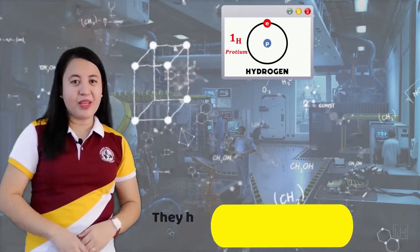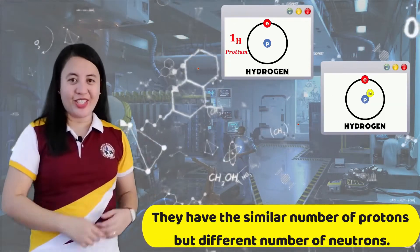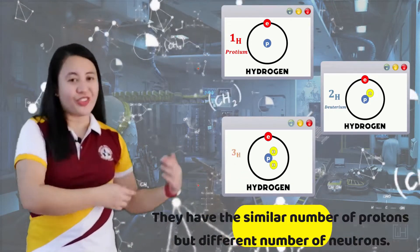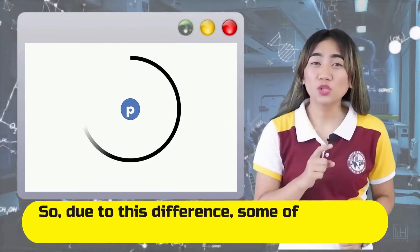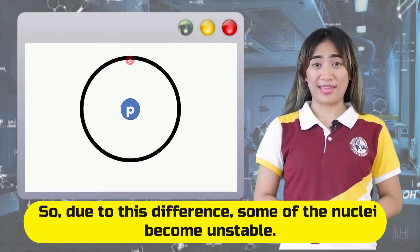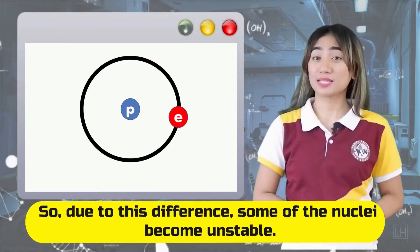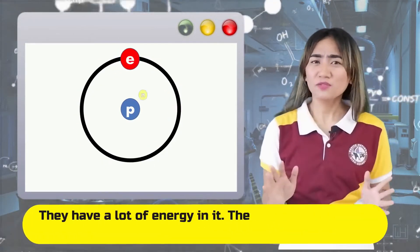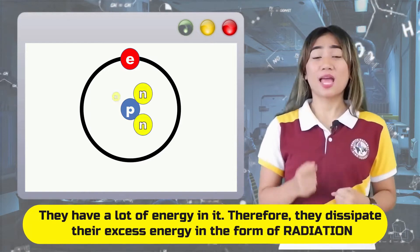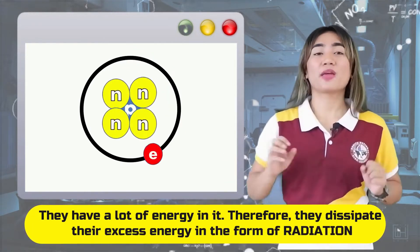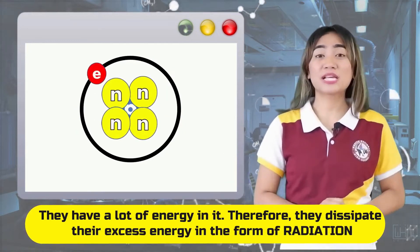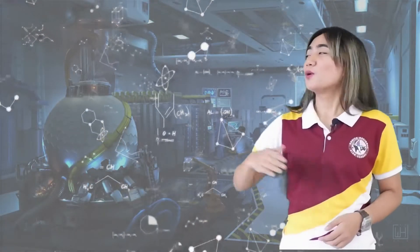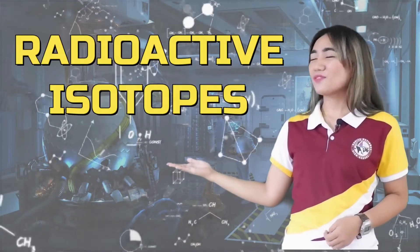Isotopes have a similar number of protons but a different number of neutrons. Due to this difference, some of the nuclei become unstable, because they have a lot of energy in them. Therefore, they dissipate their excess energy in the form of radiation, and those isotopes are called radioactive isotopes.